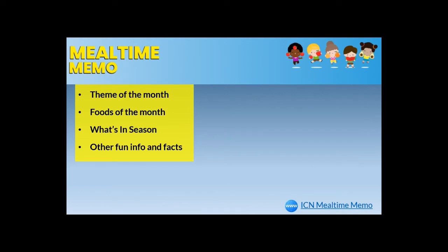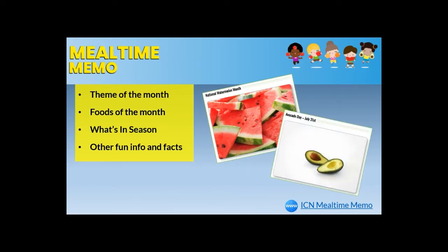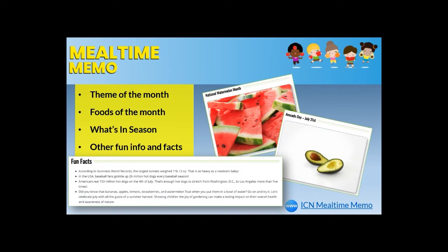ICN also sends out monthly Meal Time Memos by email. Each month includes a message on a theme of the month and lists different foods of the month — for example, July is National Watermelon Month and July 31st is Avocado Day. You can incorporate foods from National Food Days into your menus. The memo also includes information on foods in season and other fun information and facts for kids. You can sign up for the Meal Time Memo for free at the link on this slide.